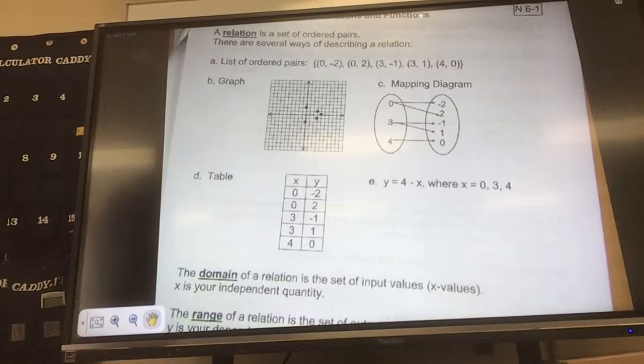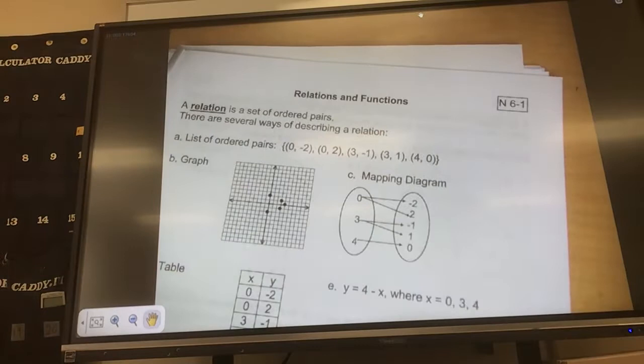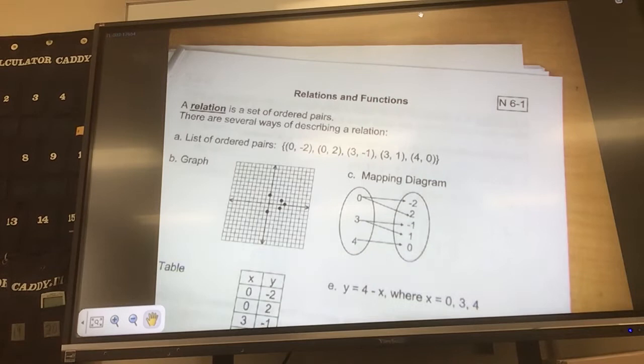Alright, this is note 6-1, relations and functions. So relations, a set of ordered pairs. There are different ways to write this. These all say the exact same thing, by the way. Someone earlier asked which one's the right answer. The answer is yes. They all are exactly the same thing.